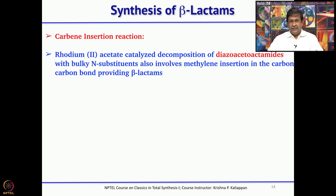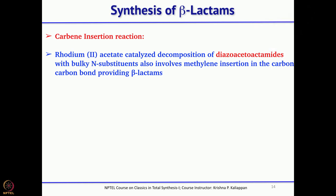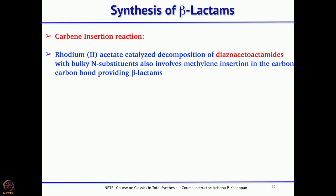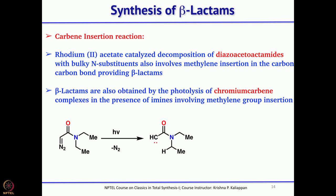Another important reaction to make beta-lactams is carbene insertion. Carbenes are generally generated from diazo compounds. If you have a diazo compound and treat with dirhodium tetraacetate, it generates in situ a carbene or rhodium carbenoid. This rhodium carbenoid can immediately undergo carbene insertion at the carbon to give the corresponding beta-lactam.